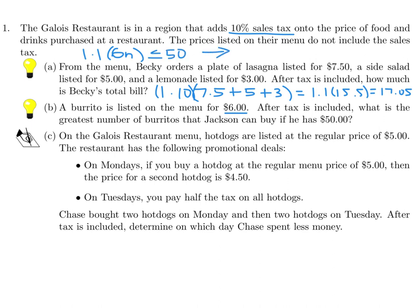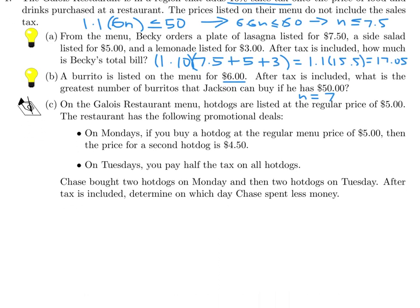When you do this math, it becomes 6.6n is less than or equal to 50. When you divide through by 6.6, you get n less than or equal to 7.5. Therefore, the largest whole number is n equal to 7. So 7 burritos is the most he can buy with his $50.